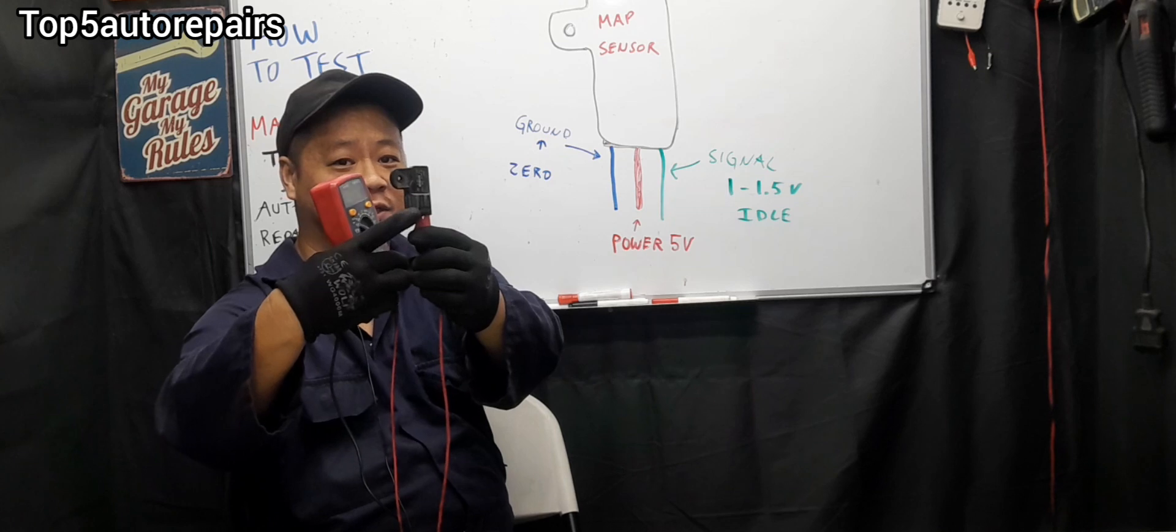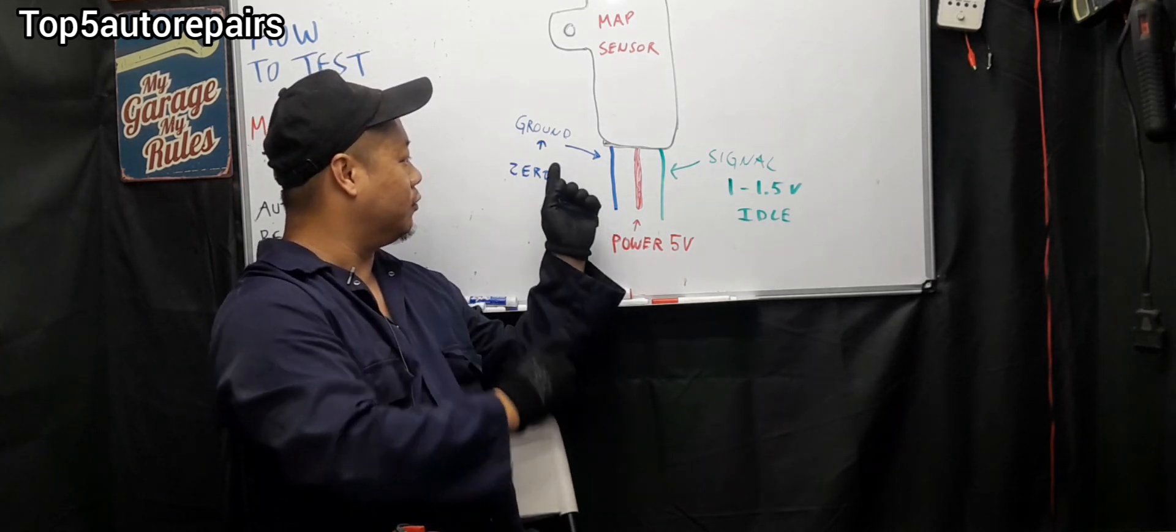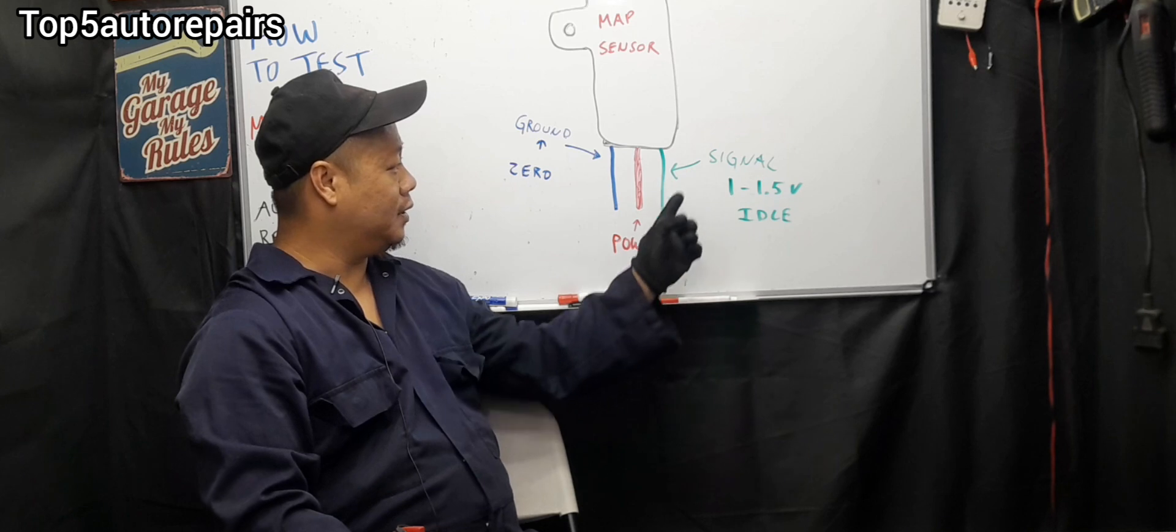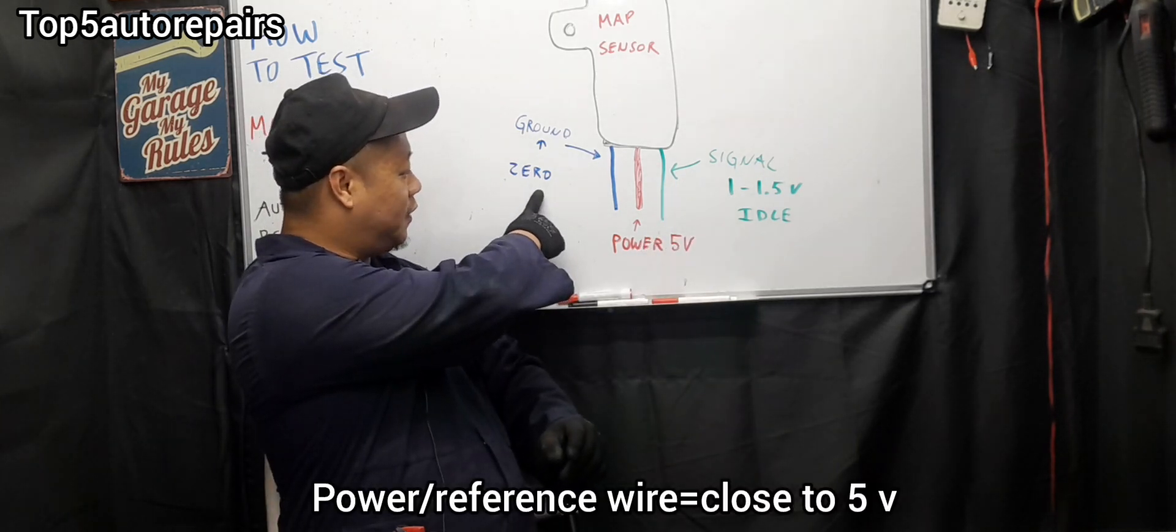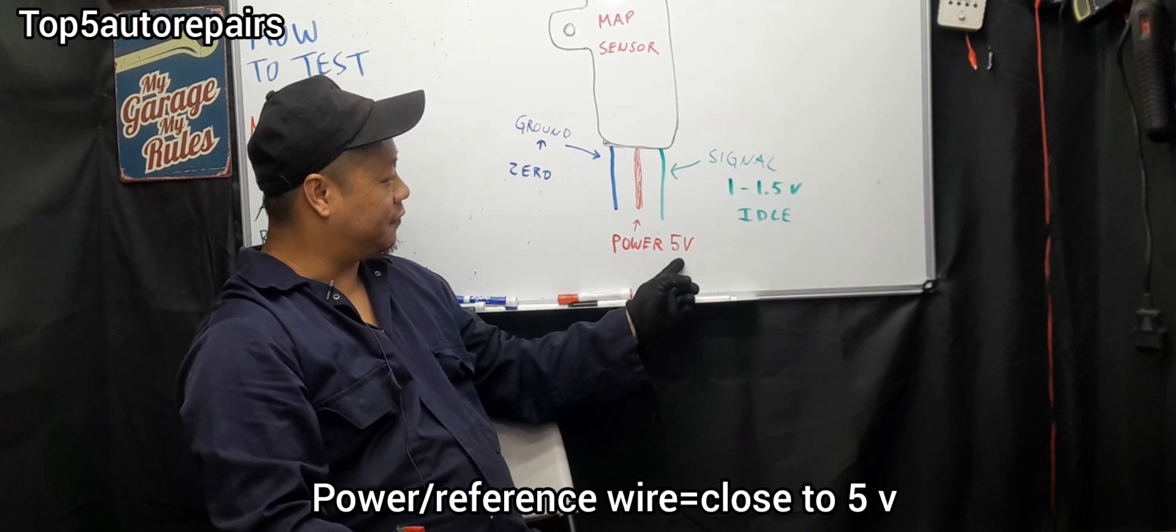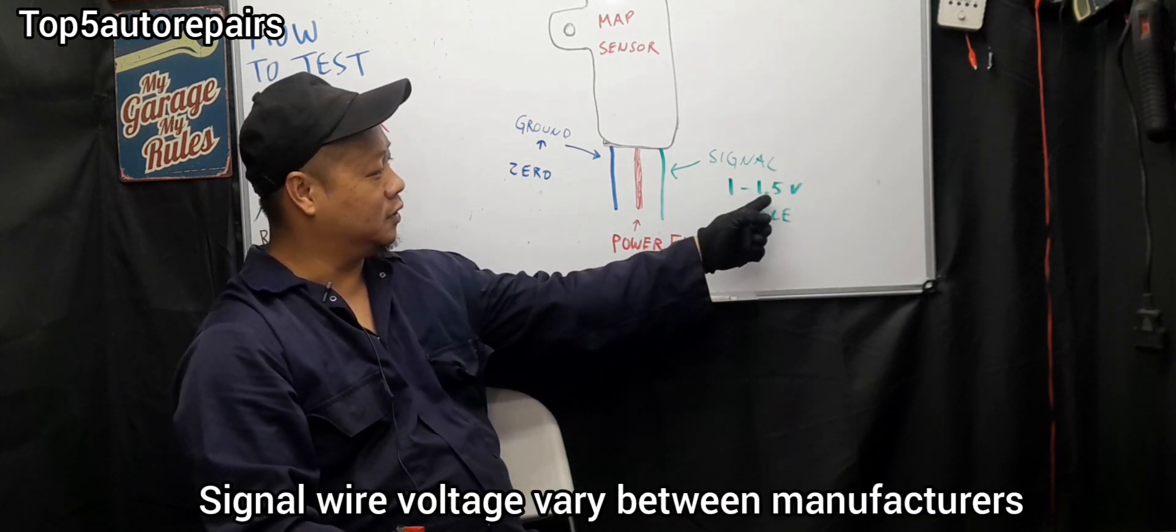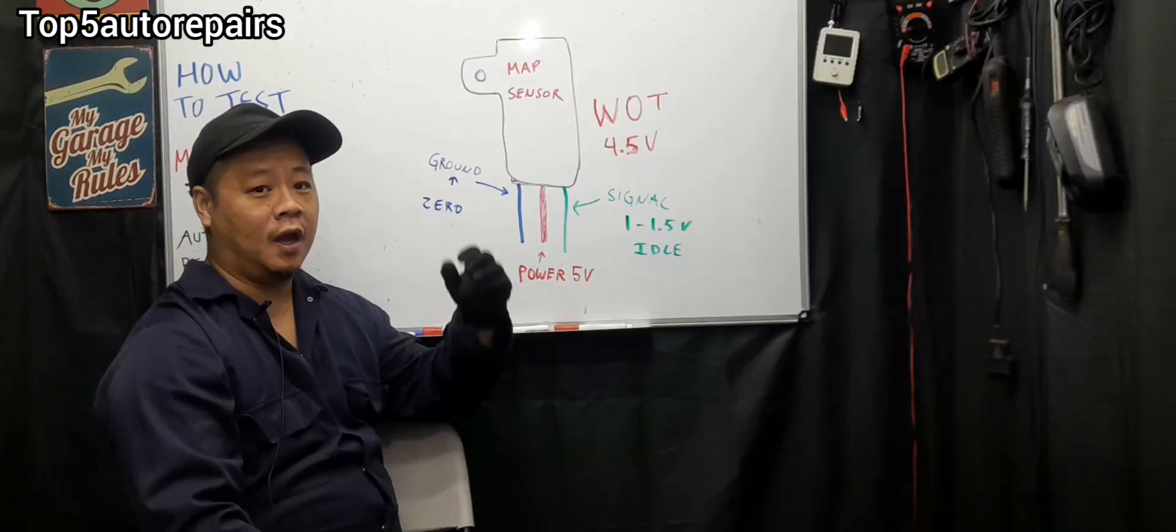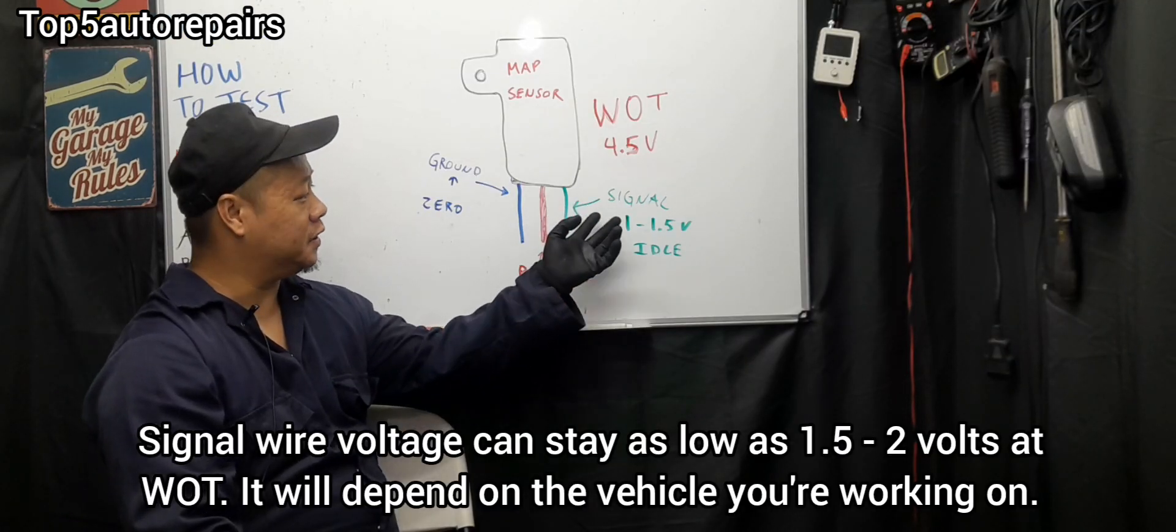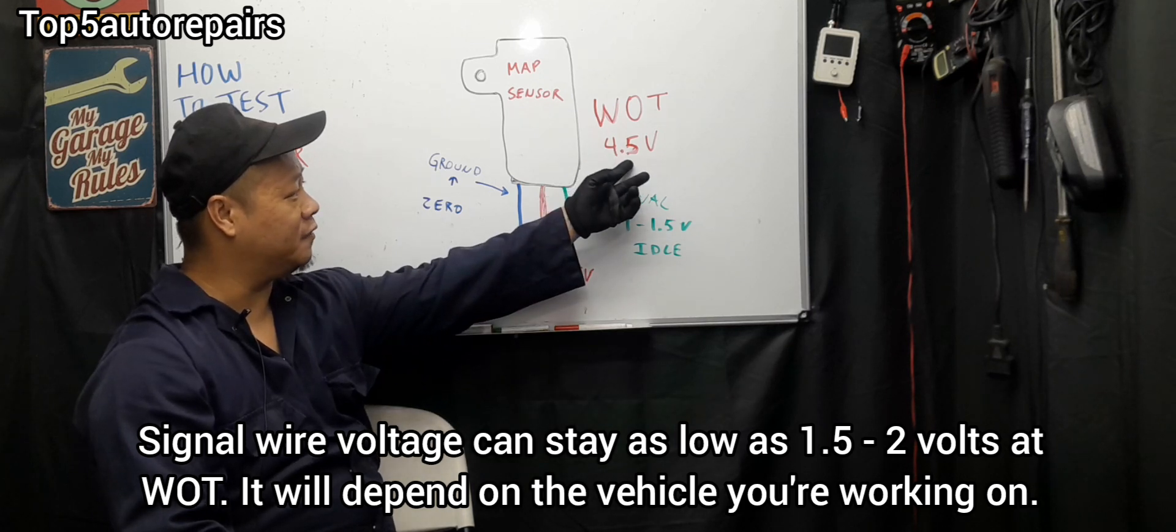Before testing the MAP sensor with a multimeter, you must first identify the ground, power, and signal wires. Ground should be 0 volts, power should be 5 volts, and signal should be between 1 to 1.5 volts at idle. At wide open throttle, signal voltage should gradually increase to 4.5 volts.